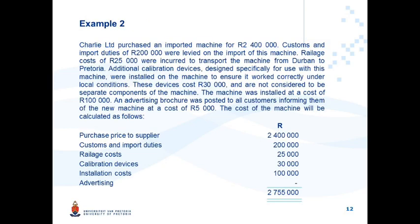Example two: an entity incurred a number of costs on an imported machine. The purchase price was R2,400,000; customs and import duties were R200,000; railage to transport the machine from Durban to Pretoria was R25,000; calibration devices designed specifically for use with this machine and installed to ensure it worked correctly under local conditions cost R30,000; installation cost was R100,000; and an advertising brochure posted to all customers informing them of the new machine cost R5,000. You need to decide which costs were necessary to get the machine in the location and condition necessary for its intended use.